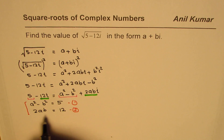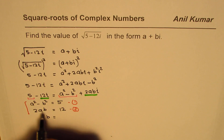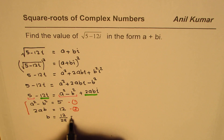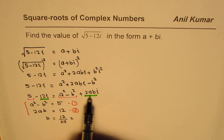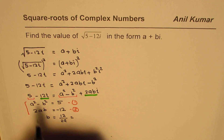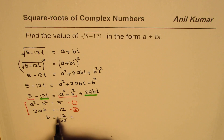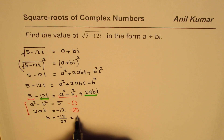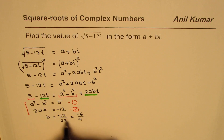From equation 2, I can write b in terms of a. The imaginary part is minus 12, so 2ab equals minus 12, which gives b equals minus 12 divided by 2a. That simplifies to b equals minus 6 over a.